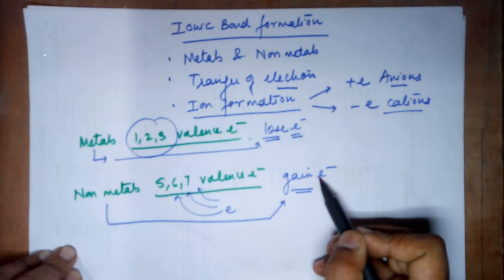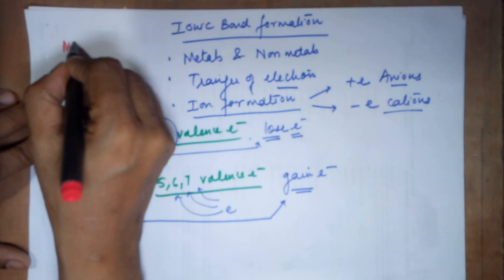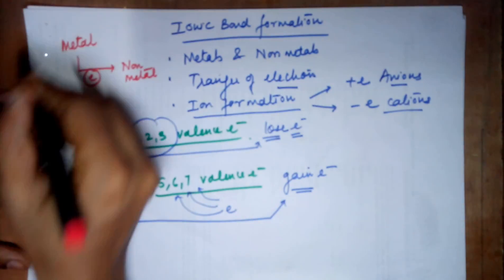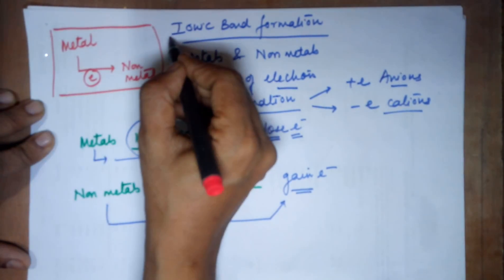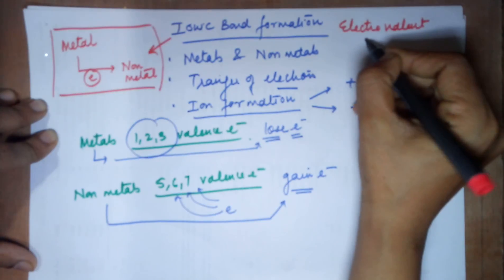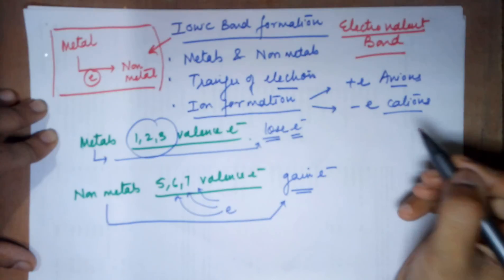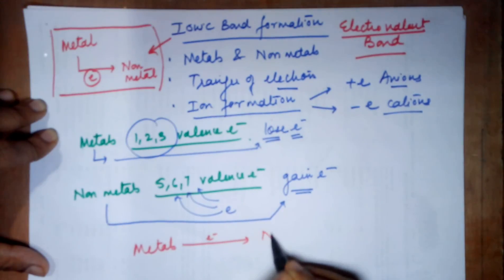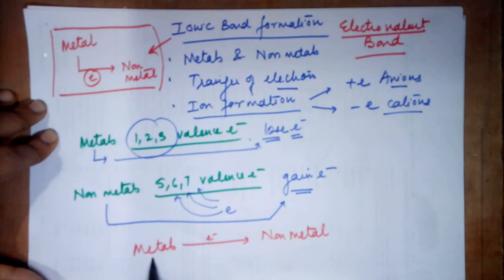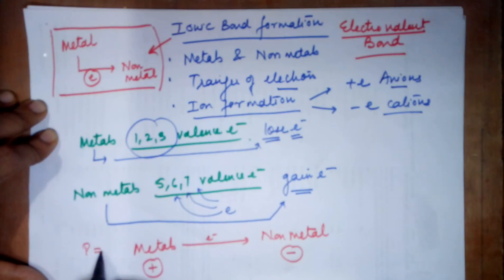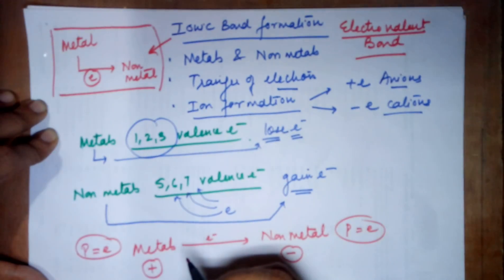Coming to the ionic bond formation: metals have a tendency to lose electrons, non-metals have a tendency to gain electrons. So when a metal gives its electrons to the non-metal, this is the summary of ionic bond formation. Ionic bond — there's another word for it: electrovalence bond. This means the metal transfers electrons to the non-metal, so the metal transforms into a positive ion and the non-metal becomes a negative ion because of the gain of electrons.